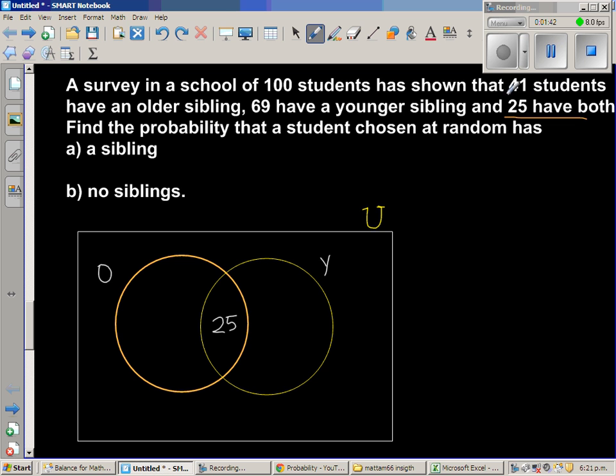So let us read the question again. 41 have older siblings. So this area is for the older sibling. So the total area of this is 41. This has already occupied 25. So I have to do 41 take away 25, which is 16. So 16, this shows, or you can say 16, there are 16 students who have only older siblings.